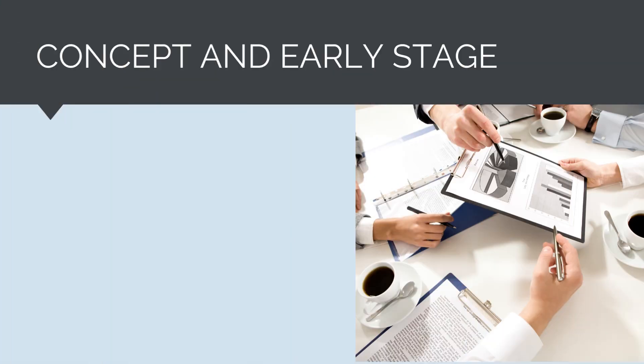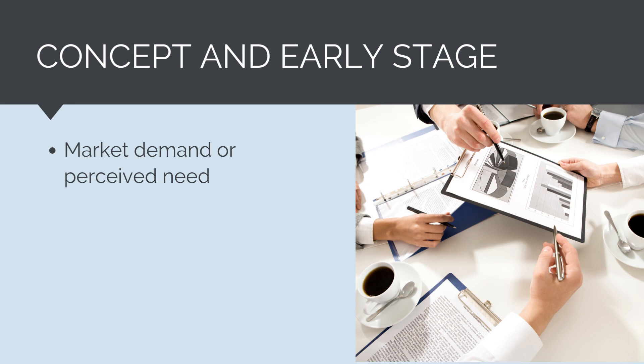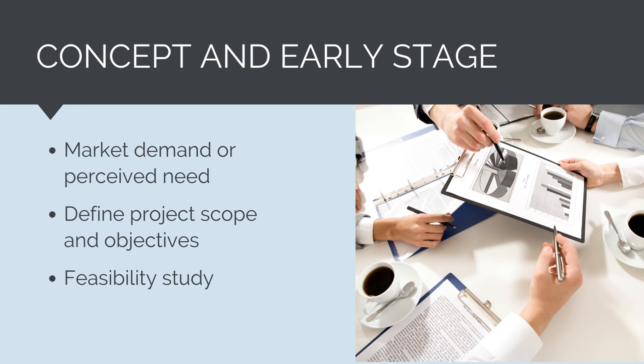A construction project requires a massive expenditure of capital. Therefore, for a project to proceed, it must satisfy some market demand or need — a new road will only be financed and built if we believe people will use it. In the concept and early stages, the project owner will look at the perceived need for a project, define the project scope and objectives, and conduct a feasibility study to determine whether the value delivered is greater than the cost, and begin early concept planning and concept design. If the value delivered is greater than the cost and the project is feasible, then the project will proceed to the next stage. If not, then the project will end here.